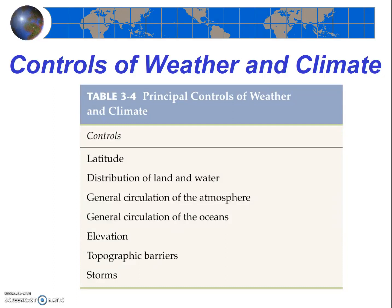Your text does a good job of introducing these controls. Importantly, take a few minutes right now to review the textbook explanation of each control so that you could give either a general or specific example of how each control affects one or more of the elements of weather and climate. At this point, it may be easiest to focus on temperature, but you can consider pressure, moisture content, or wind as well. Again, go to your textbook and review these seven controls. We're going to be spending considerable time on them in the next chapter as well.